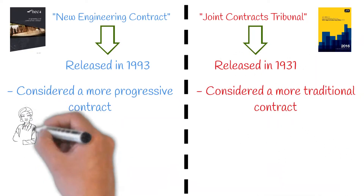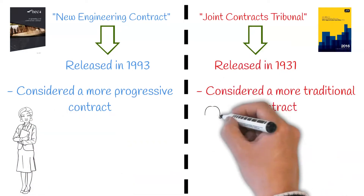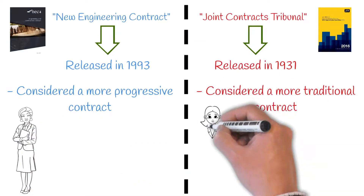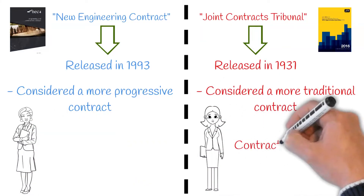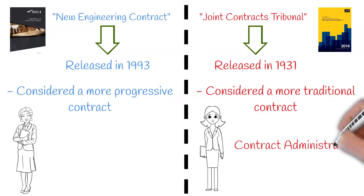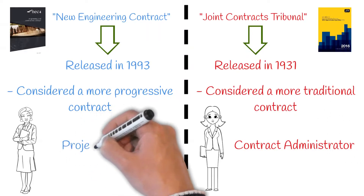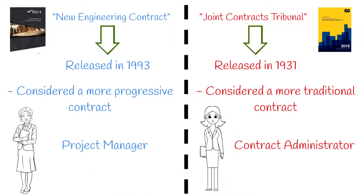Each contract appoints a person who acts on behalf of the employer. For the JCT contract they are known as the contract administrator, and under the NEC they are known as the project manager. Let's look at how these contracts are administered differently, split down into two key areas: time and cost.